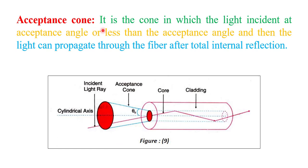One more parameter is the acceptance cone. The acceptance cone is the cone in which light is incident at the acceptance angle or less than the acceptance angle, and then the light can propagate through the fiber after total internal reflection. In the diagram, the center region is the core and the outer region is the cladding. Theta naught is the acceptance angle, and this is the acceptance cone.